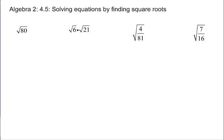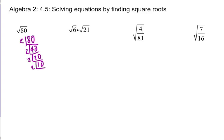If we're going to simplify the square root of 80, one of the things I like to do is a little upside-down division. I think of the smallest prime number that can go into 80 — in this case, 2 — and divide it. So 80 divided by 2 is 40. I keep doing this with the smallest prime number I can think of, until I get all the way down to just prime numbers.